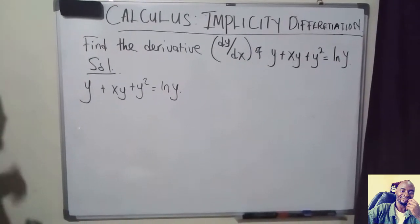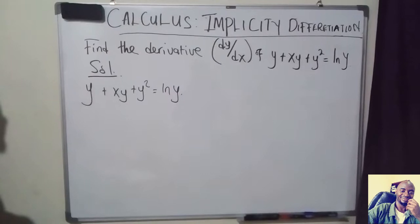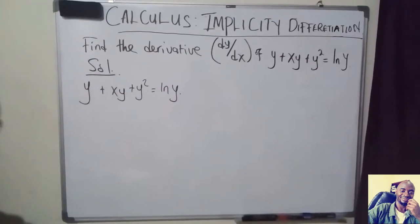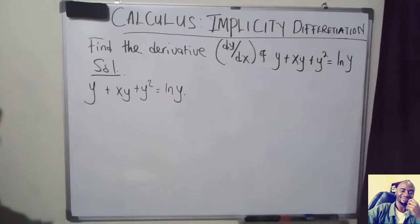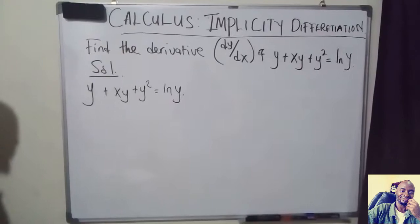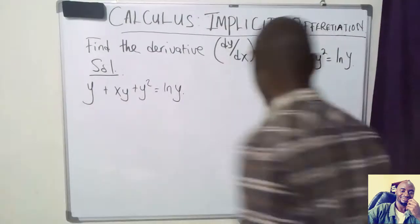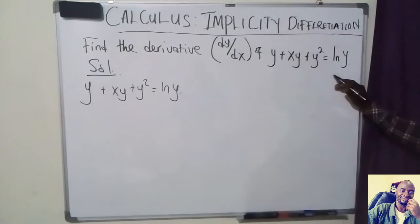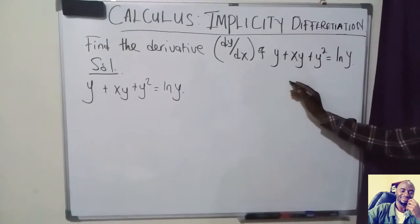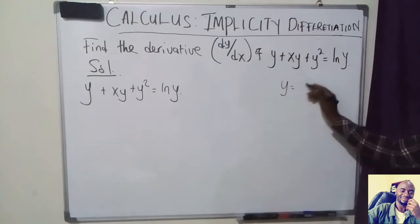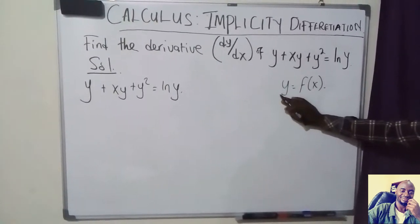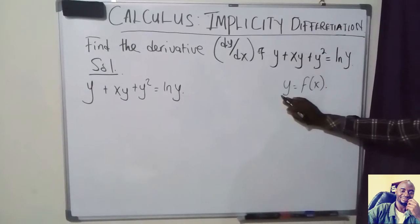In this video I want to see how we can use implicit differentiation to find dy over dx, or the derivative of the given function. When we say implicit functions, sometimes it's very easy to make y the subject of the formula. But when you look at this particular function, it will be very difficult to express y as a function of x — in other words, it will be very difficult to make y the subject of the formula.